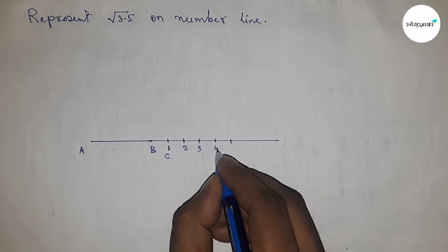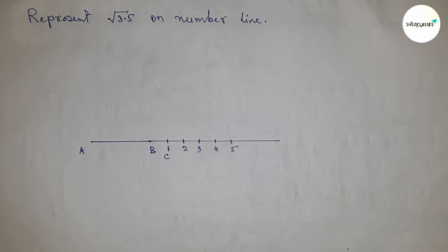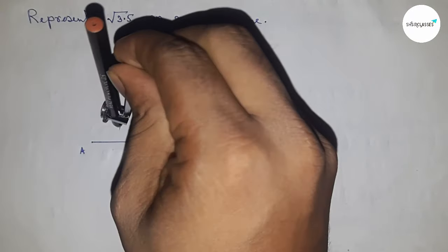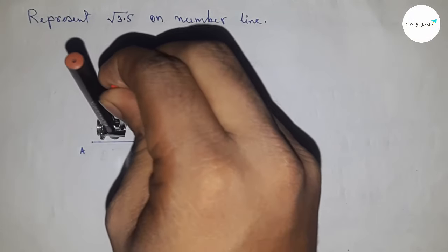So marking all the numbers on the line: this is 1, 2, 3, 4, 5. This is C point at 1, then 2, 3, 4, 5.